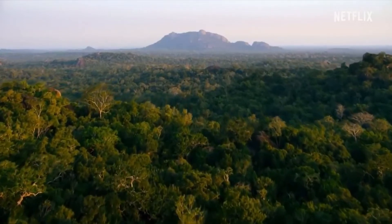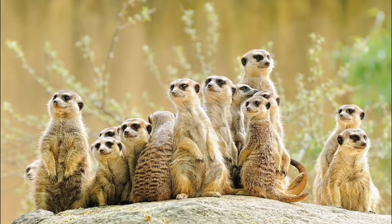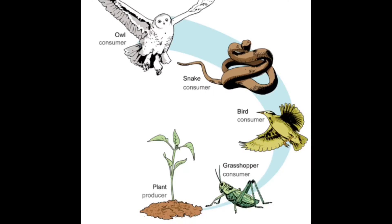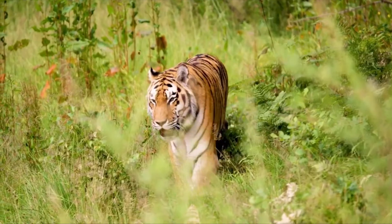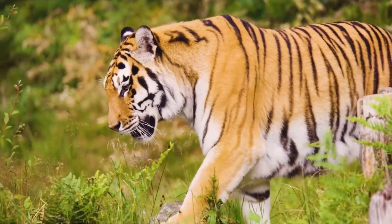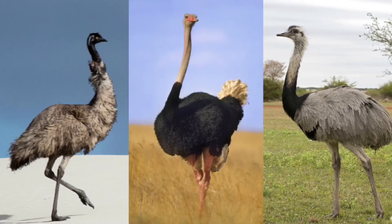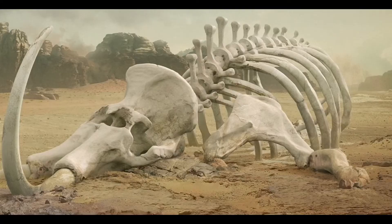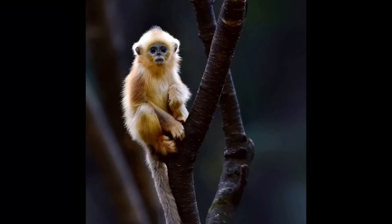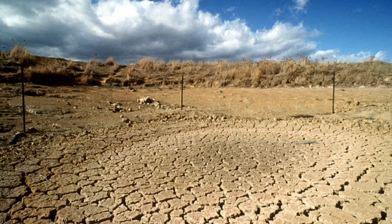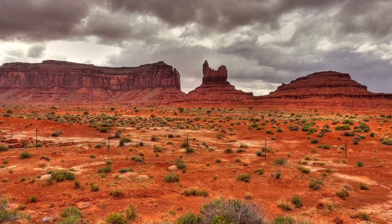High biodiversity has many different species that constantly interact with each other. Each species has a role in its ecosystem relative to other organisms — this role is called a niche. In diverse ecosystems, different species can have similar roles, so if a particular species is lost, another could take over its niche. In low biodiversity ecosystems, there might not be another species to take over that niche, making the ecosystem unbalanced.